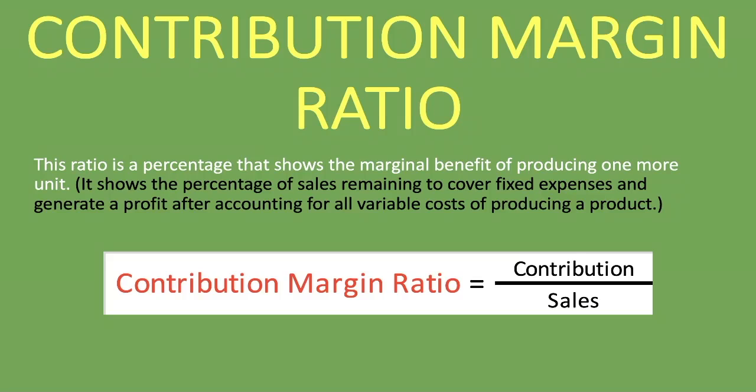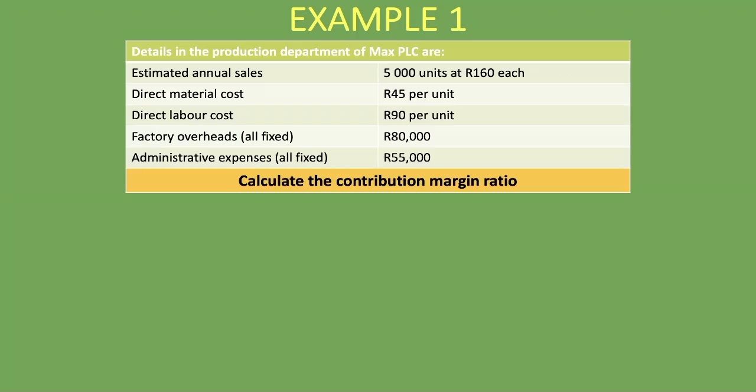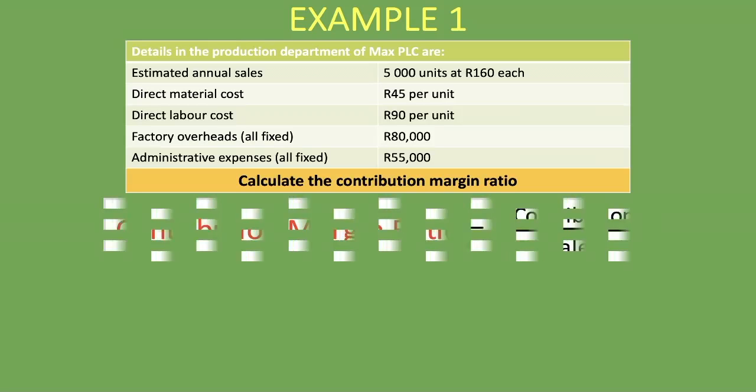Let's go through an example. We're told that the details in the production department of Max PLC are 5,000 units at R160 each. We are given direct material cost, direct labor cost, factory overheads, and administrative expenses. We are asked to calculate the contribution margin ratio.